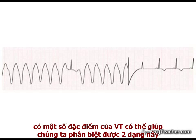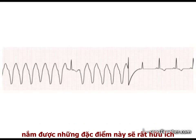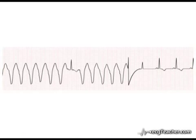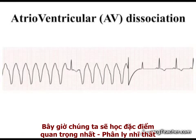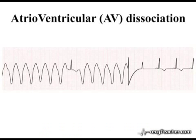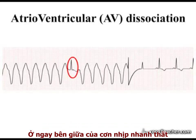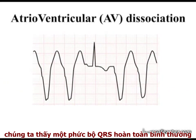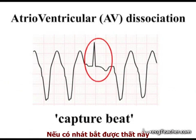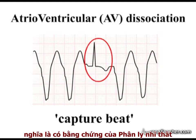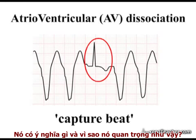There are several features of VT which help us to make this distinction. Knowledge of these features will come in very useful. We will now deal with the most important of these features: atrioventricular dissociation. There is an interesting event on our patient's monitor — at this point in the middle of the tachyarrhythmia, we find an apparently normal QRS complex. This is a capture beat. The presence of a capture beat is evidence of atrioventricular dissociation. What does this mean, and why is it so important?